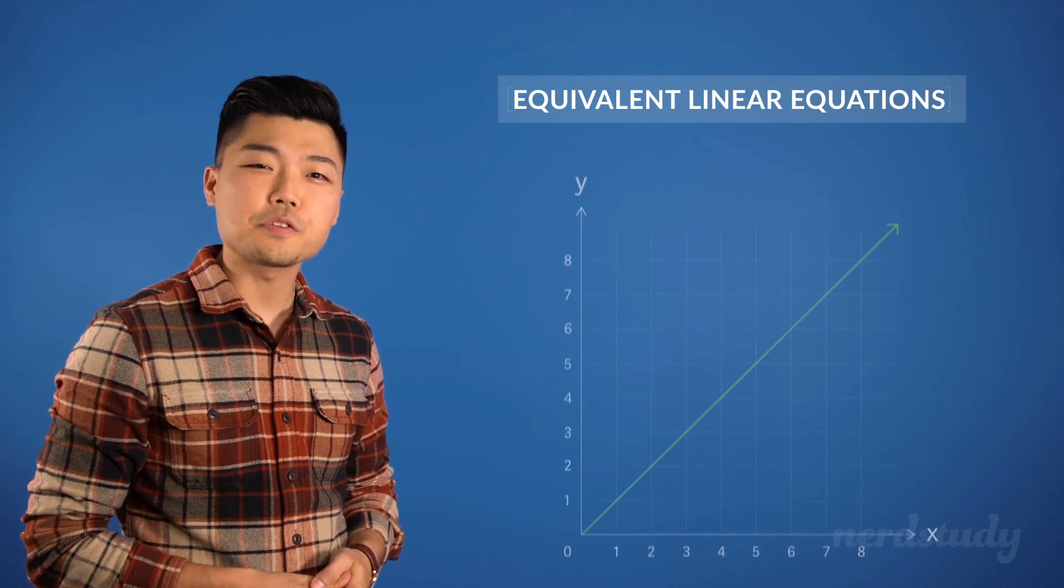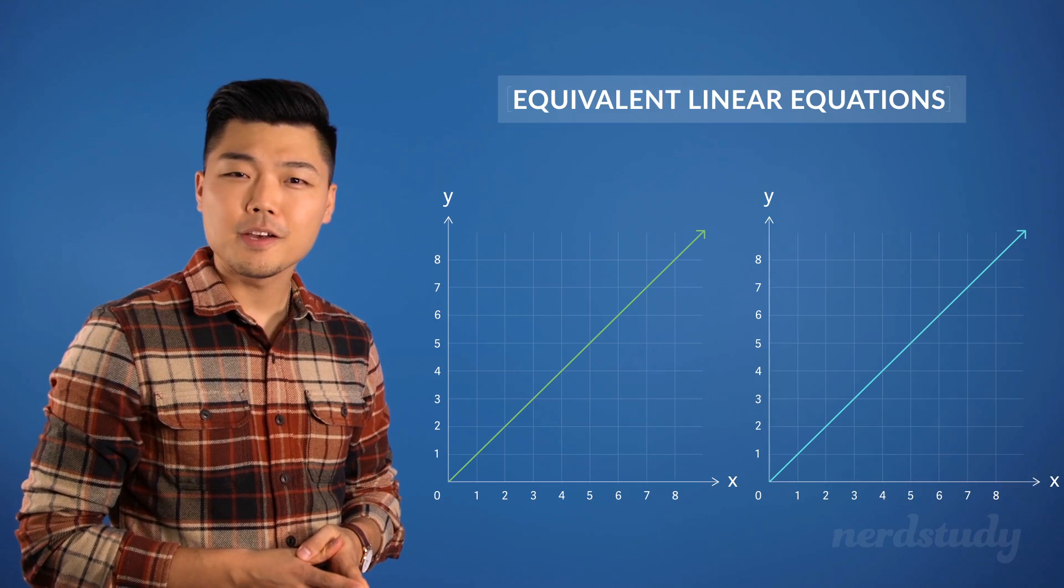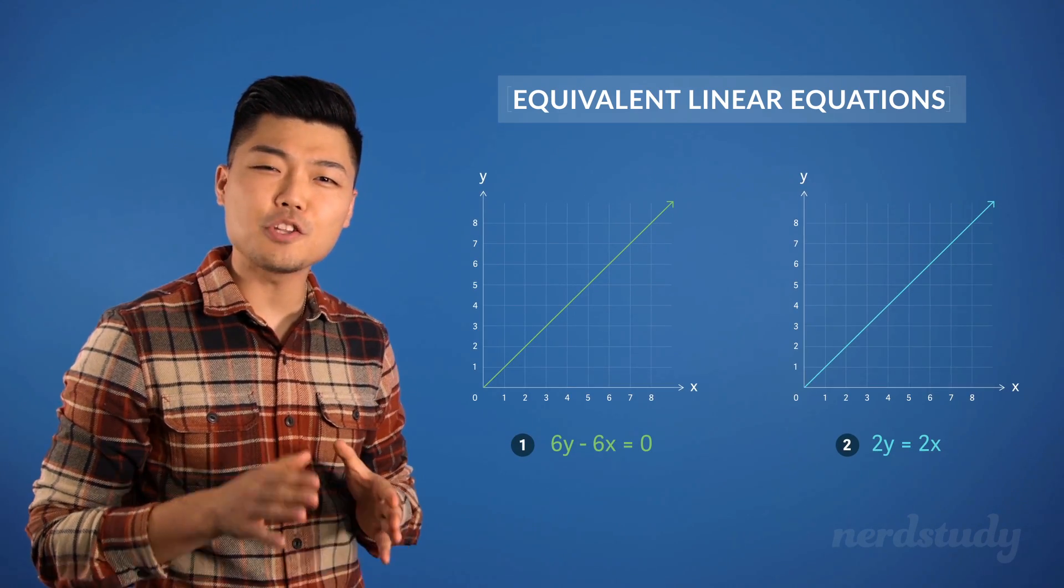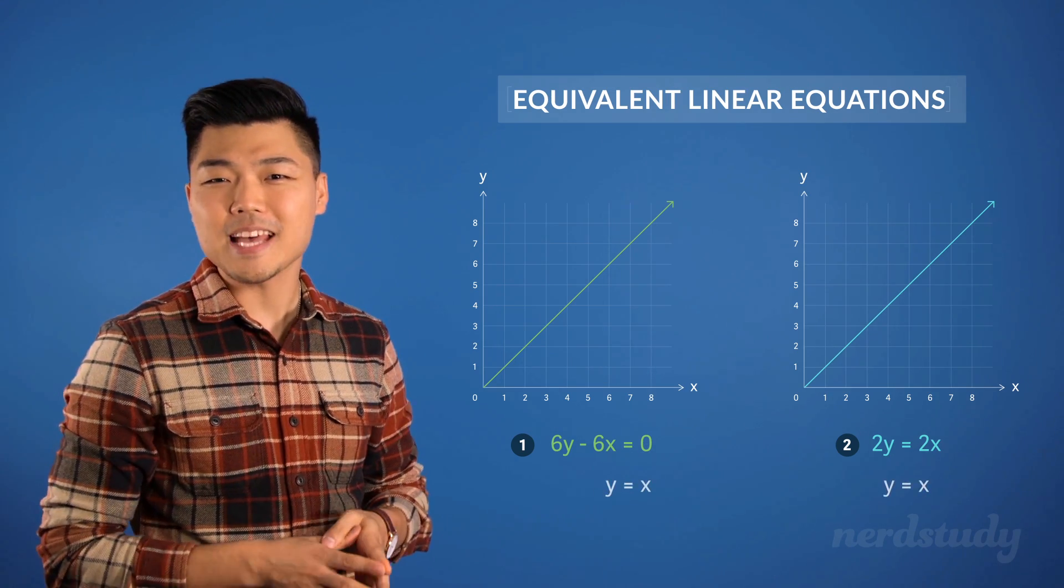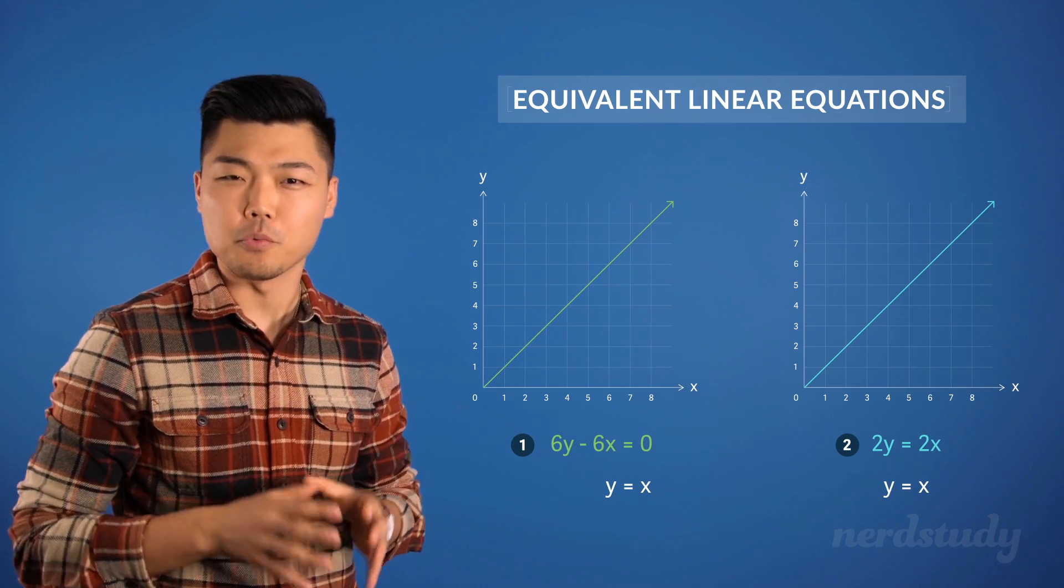Equivalent linear equations are equations that have the exact same graph. So you can have two equations that are seemingly not identical in how they look, but are exactly the same when you simplify them down to their bare bones.